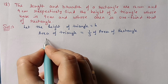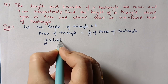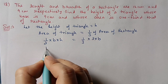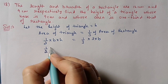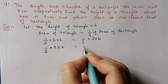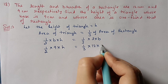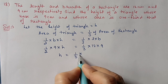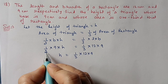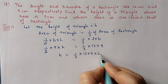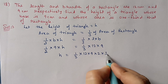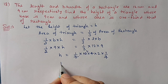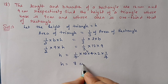Area of triangle = ½ × base × height, and one-third of area of rectangle = (1/3) × length × breadth. Substituting: ½ × 9 × h = (1/3) × 12 × 9. Shifting terms: 2 goes to multiplication and 9 cancels. Therefore height = 4 × 2 = 8 centimeters.